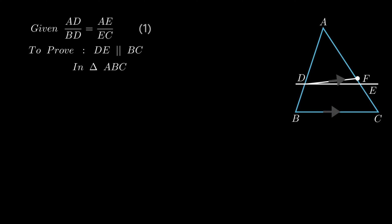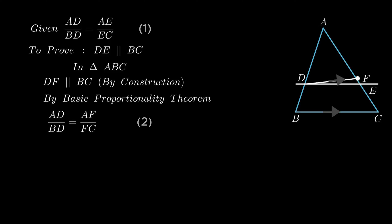In triangle ABC by construction segment DF is parallel to segment BC therefore by applying basic proportionality theorem we get the ratio of segment AD to BD equals the ratio of segment AF to segment FC.